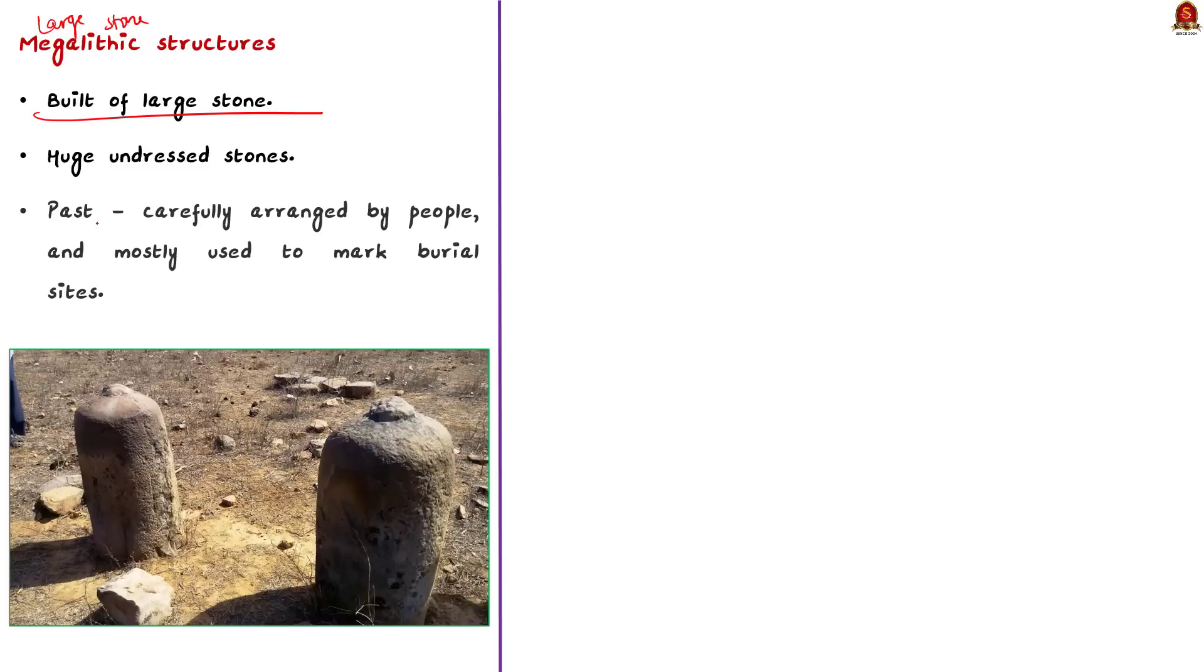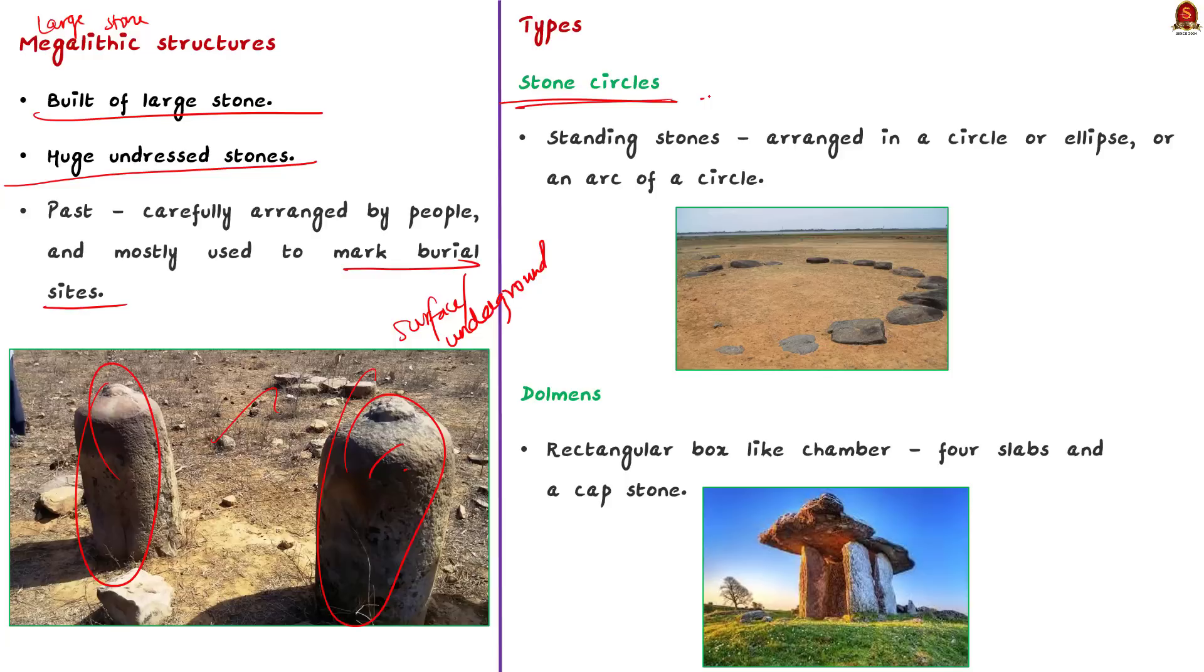Generally, these Megaliths are huge undressed stones. These structures often throw light on building activities and they formed a way of life in the past. The one you see in this picture is a Megalith. In the past, these Megaliths or big stone boulders were carefully arranged by people and mostly they were used to mark burial sites. So, as such, Megalith is a grave or memorial stone. Some Megaliths can be seen on the surface. Other Megalith burials are found underground. Sometimes, archaeologists find a circle of stone boulders or a single large stone standing on the ground. These are the only indication that there are burials beneath them.